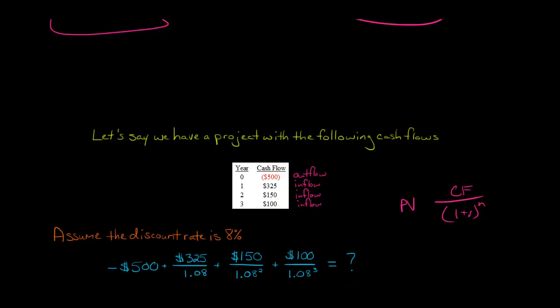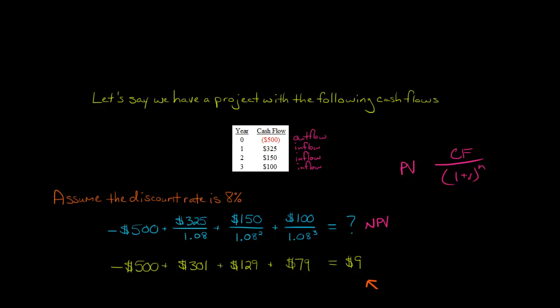And then this here, we don't know it yet, but that's going to be our NPV. That's going to be our net present value, and it could be positive, it could be negative, it could be zero.